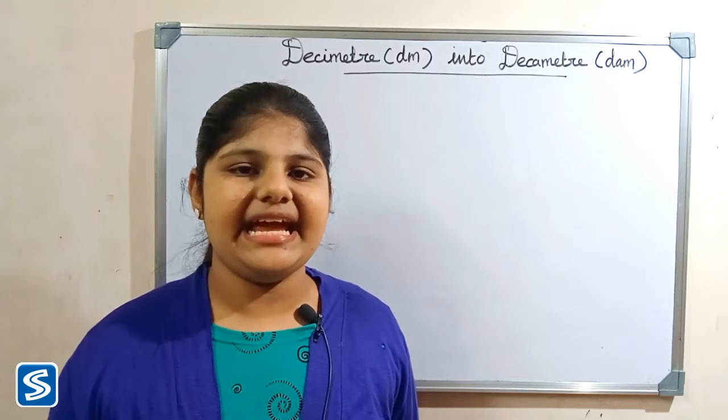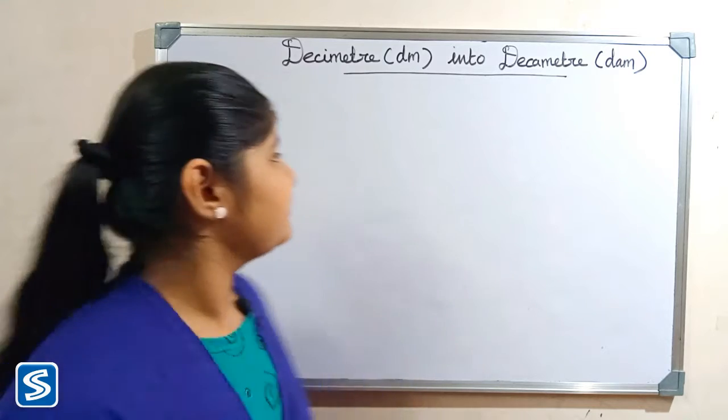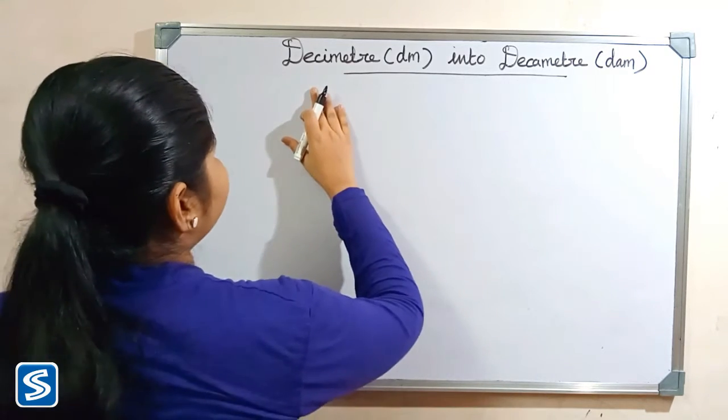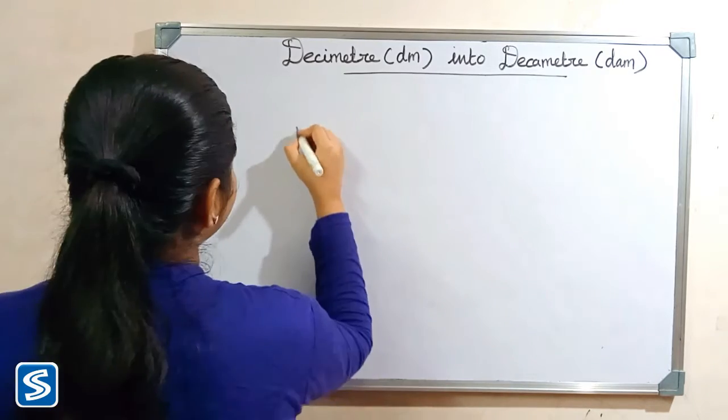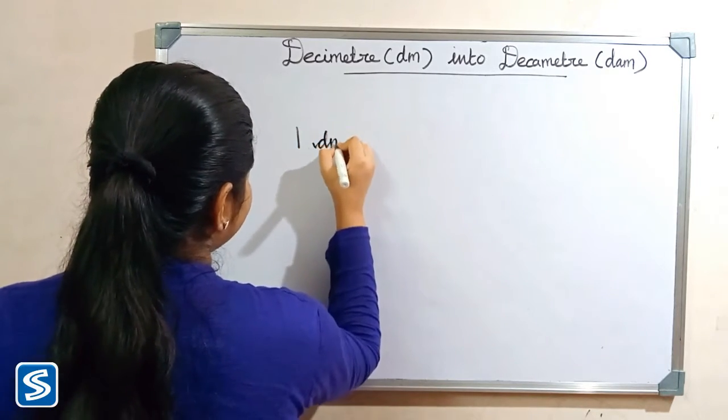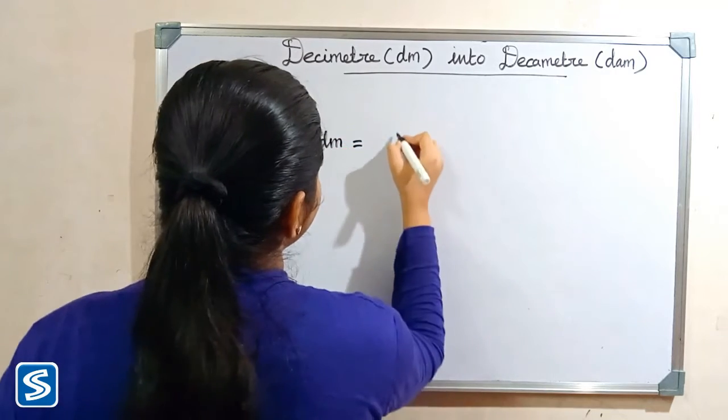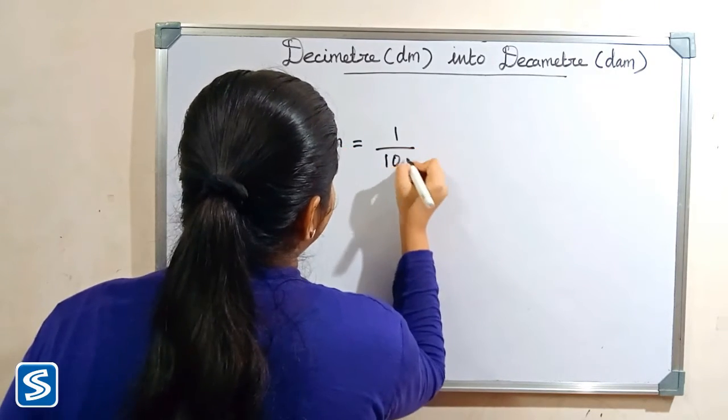So the formula for converting decimeter into decameter is 1 decimeter is equal to 1 by 100 decameter.